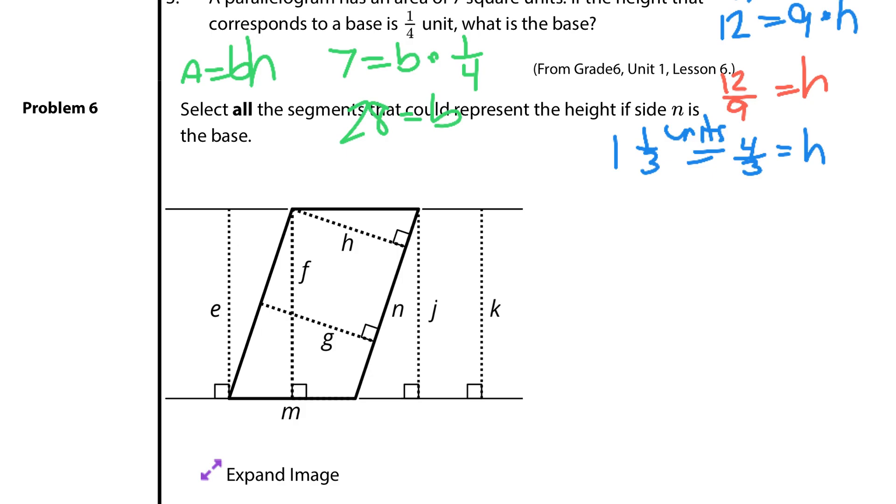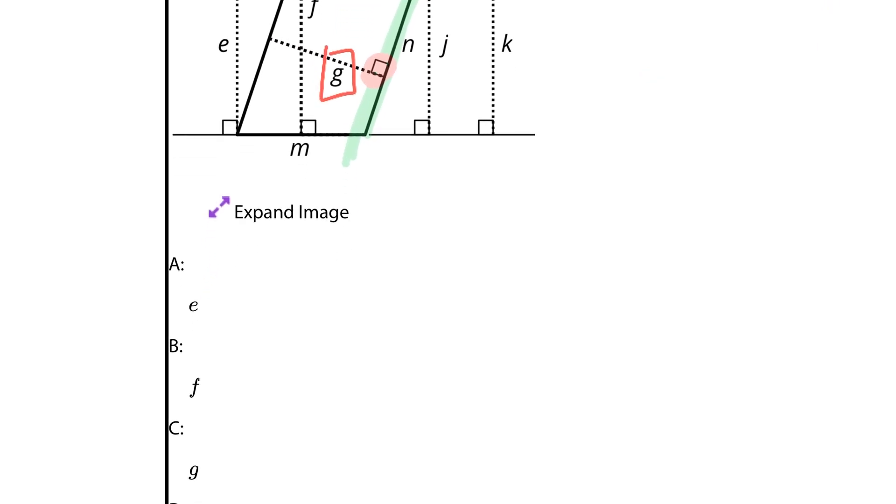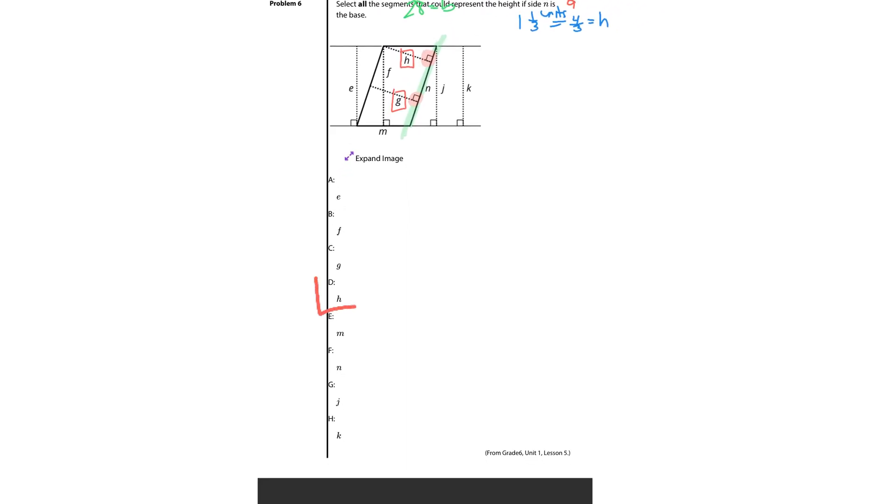In question six, select all the segments that could represent the height if side n is the base. I want to highlight that base there. If side n is the base, we want to look for anything that meets it at a right angle. Where are our right angles? Here and here. So that pretty much looks like we have h and g, and that's just about it. So our solution here, as we zoom out to this long multiple choice question, is d because that covers h, and c because that is g. So c and d are your solutions there.